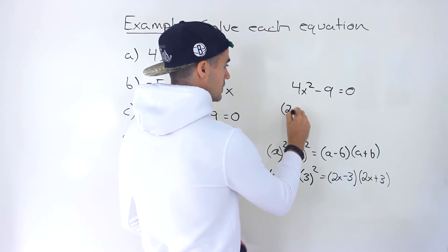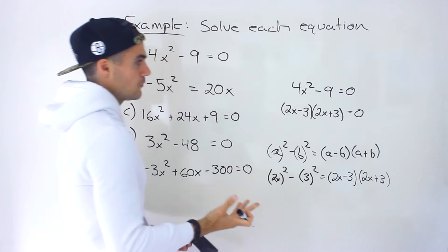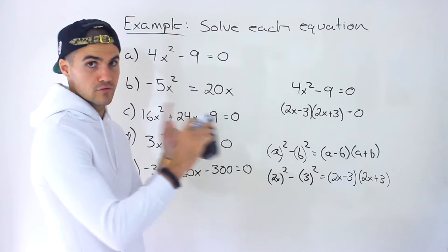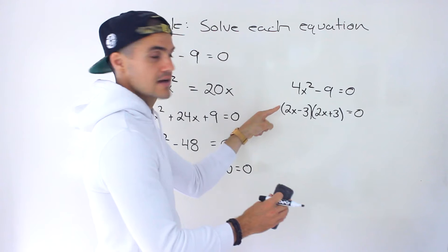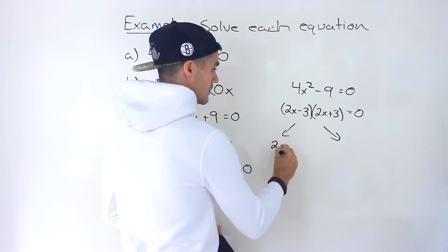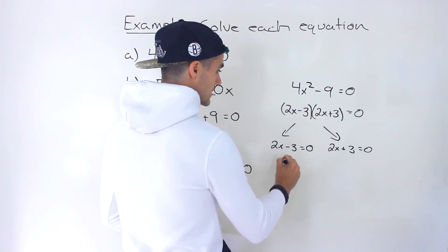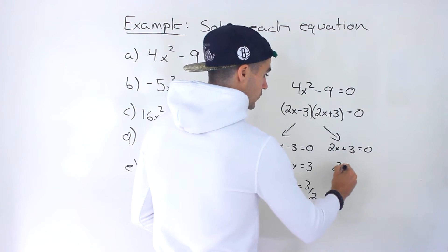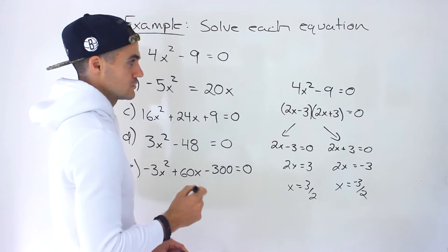Going back to the equation, we got (2x minus 3)(2x plus 3) equals 0. The way the left side can be 0 is if one of the brackets equals 0, because 0 times any value makes the entire left side 0. There are two cases: either 2x minus 3 equals 0, giving x equals 3/2, or 2x plus 3 equals 0, giving x equals negative 3/2. Those are the two solutions.